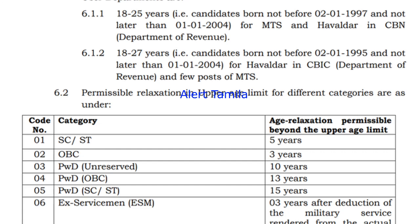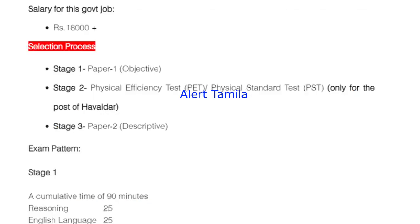You can use the AGL accession. This is the GTS post return exam. If you have a mark, you can select the selection process. If you have an exam, you can join the post office.